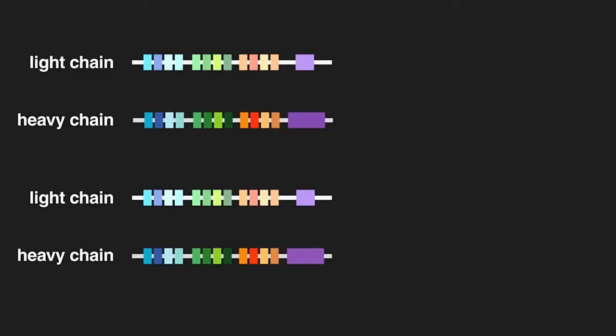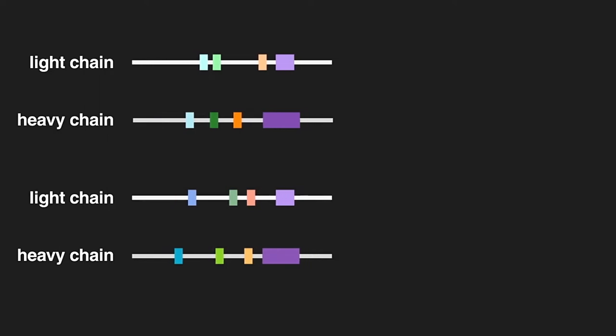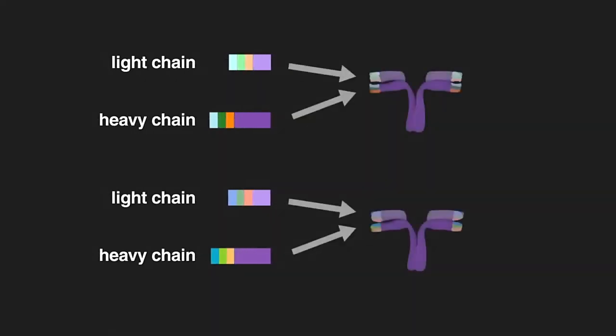Antibodies are produced by B cells through a process of recombination where the genes that code for portions of the antibody protein are recombined or shuffled to create many different variations of the final protein.